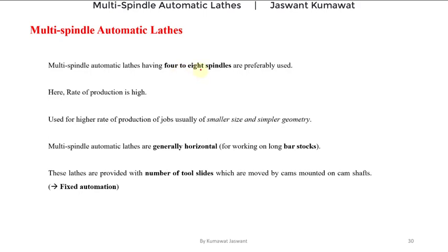Since there are a number of spindles, we can simultaneously machine several workpieces, which is why the rate of production is high. These multi spindle automatic lathes are used for higher rate of production of jobs, usually of smaller size and simpler geometry — in the same way that single spindle automatic lathes are also used for mass production of smaller size and simpler geometry jobs.